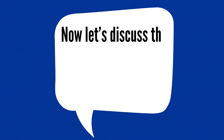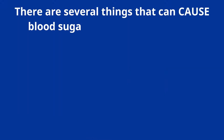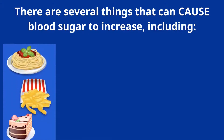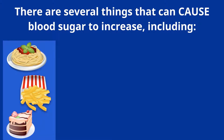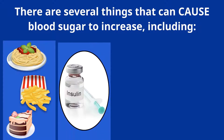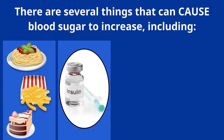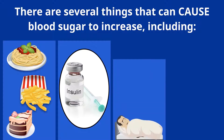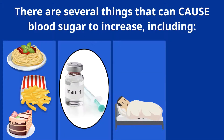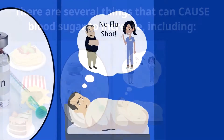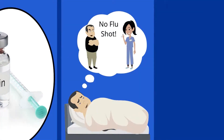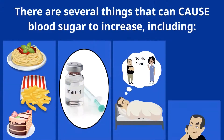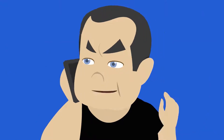Now let's discuss the causes and effects of high blood sugar. There are several things that can cause blood sugar to increase, including: 1. Eating too many carbohydrates — the digestive system converts carbs into sugar and dumps it into the bloodstream. 2. Missing an insulin dose or not taking enough insulin will result in increased blood sugar. 3. Illness or infections cause the liver to release stored sugar into the bloodstream, providing energy cells needed to fight the illness. 4. Emotional stress will also increase blood sugar.